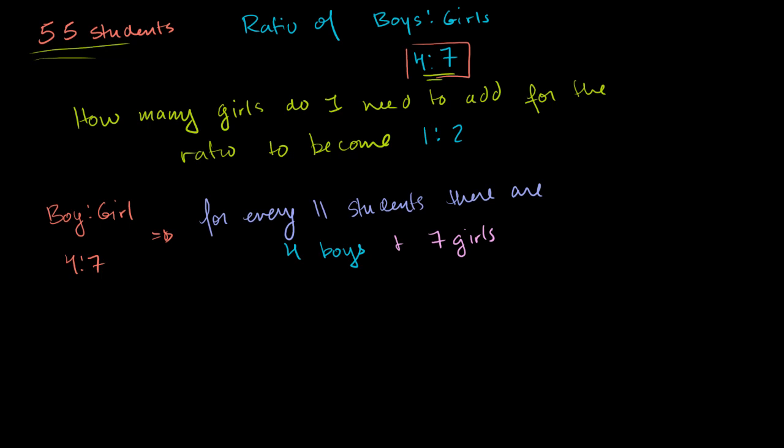Now, how many groups of 11 students are there? So there are 55 students total. We divide by 11 students per group. So how many groups of 11 students do we have? That means we have 5 groups of 11 students.